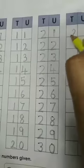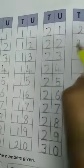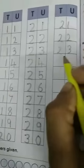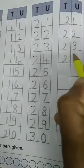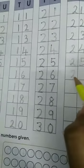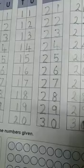Then 2, 1, 21. 2, 2, 22. 2, 3, 23. 2, 4, 24. 2, 5, 25. 2, 6, 26. 2, 7, 27. 2, 8, 28. 2, 9, 29, and 3, 0, 30.